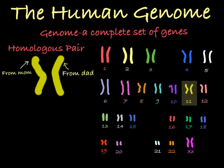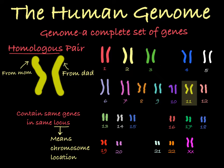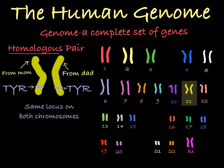This pair is called a homologous pair — homo meaning same. While these chromosomes come from different parents, they contain the same kinds of genes in the same locus, or location. For example, the locus of the TYR gene, which codes for tyrosinase, is close to the bottom of chromosome 11, so you'll always find this gene in the same locus on chromosome 11 across all humans.